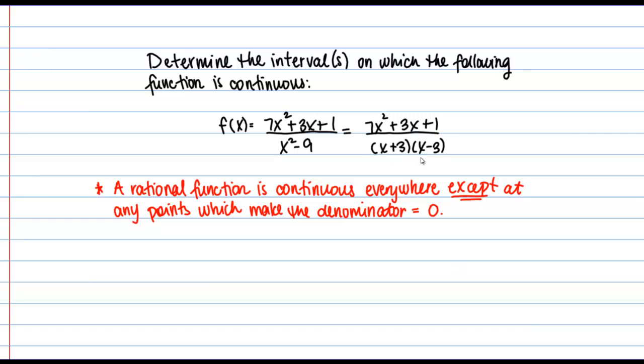So then we can see once we factor that there are going to be two x values that would make the denominator 0, specifically x equals 3 or x equals negative 3. So these are going to be points where our function f of x is not continuous.